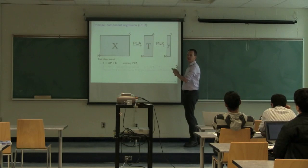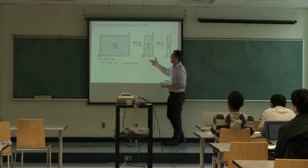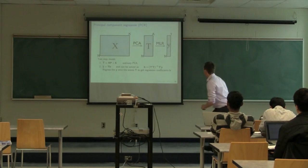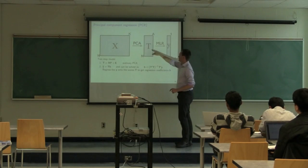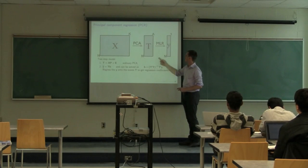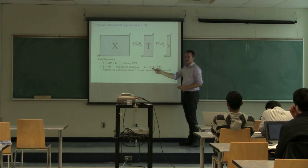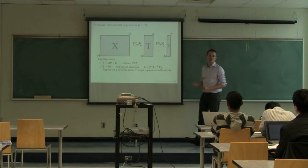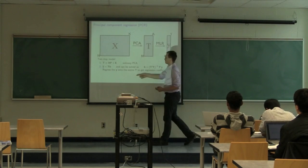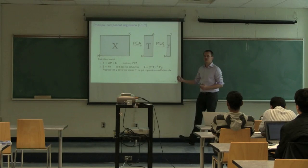Steps one and two happen totally sequentially and independently of each other. In step two, you build a model that relates your Y's to your T's, and when you calculate the regression coefficients for this multiple linear model — I'll still call them B — they're computed as T-transpose-T inverse times T-transpose-Y. In other words, we're regressing Y onto the scores T to get the regression coefficients B.